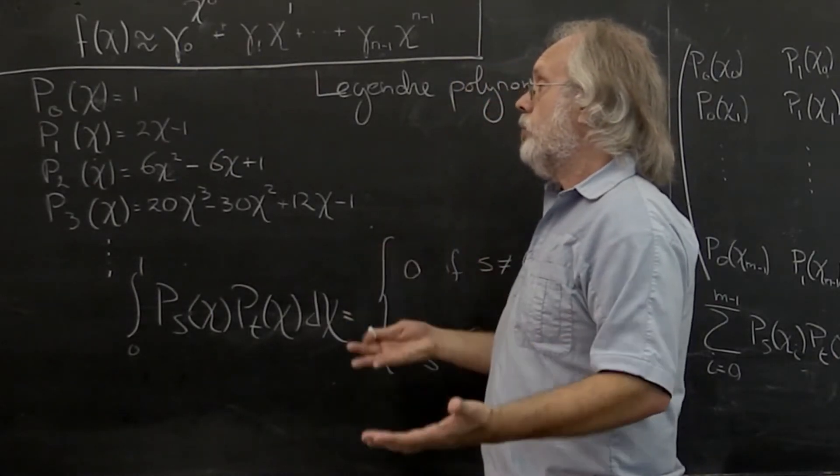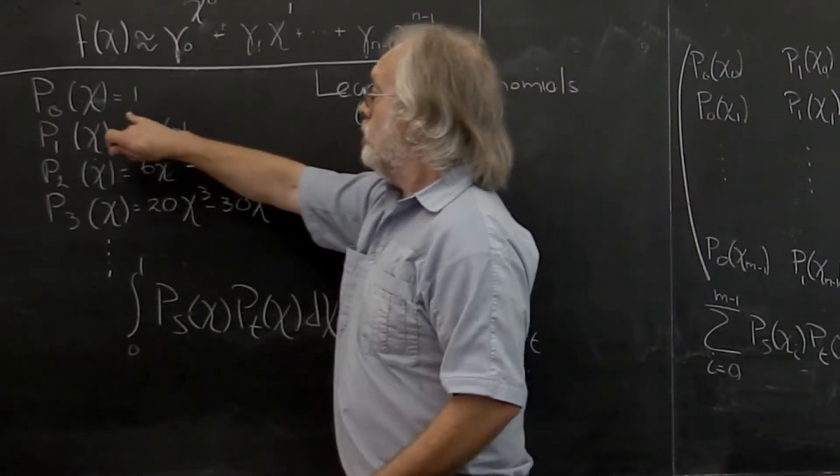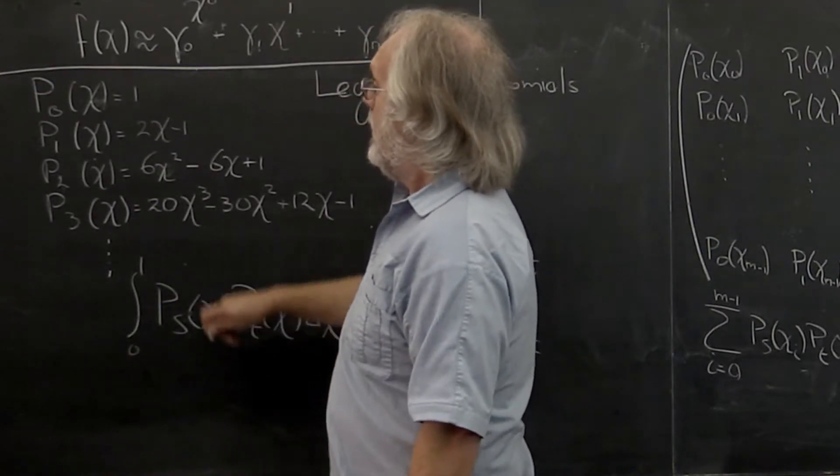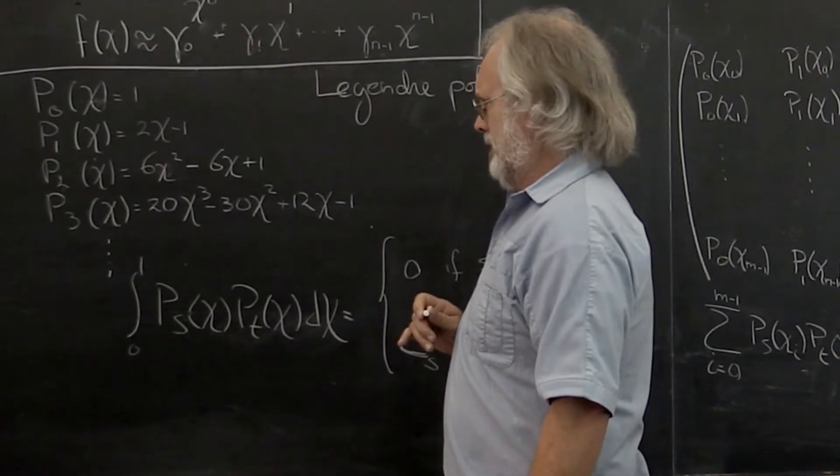What if we look for a different set of polynomials where we have a polynomial of degrees 0, 1, 2, 3, and so forth, and we define that set of polynomials differently?